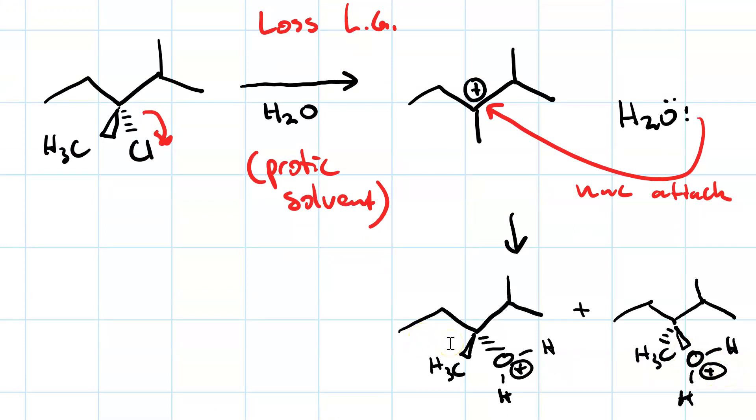This yields a pair of protonated alcohols, a racemic mixture. This is the retention product, it retains the original configuration. This is the inversion product, and it's 50% of each.